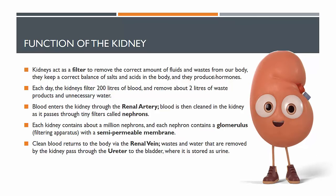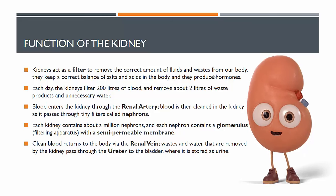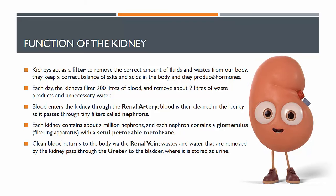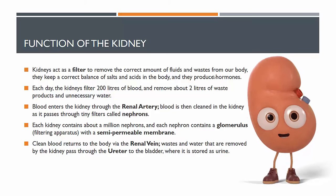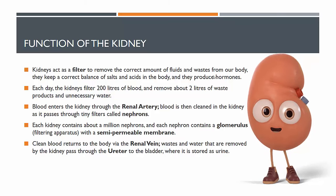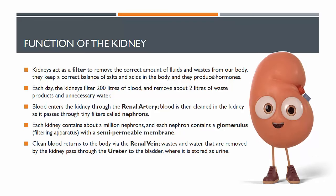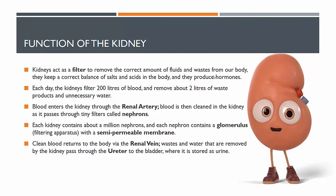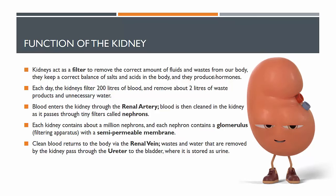Each kidney contains about a million nephrons, and each has a glomerulus — a term a lot of people get tripped up on. The glomerulus forces filtration to occur through a semi-permeable membrane. Once waste is removed, it's sent to a tube called the ureter, which goes to the bladder. The bladder's job is just to store urine.